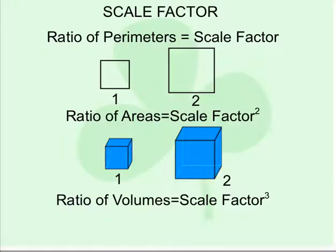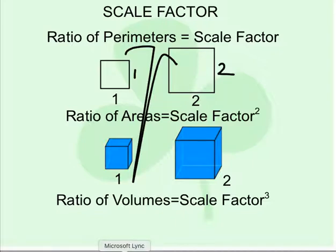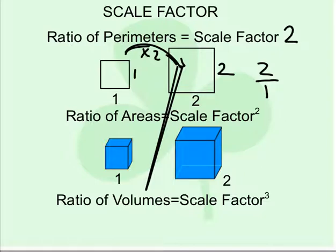If we have a square that starts 1 by 1 and we scale it up to be a square that's 2 by 2, we want to know how did we get from this perimeter of 1 to this perimeter of 2? To get there, I would have to multiply by 2, and so that is actually our scale factor. We have a ratio of the perimeters of 2 to 1, so our scale factor is 2.